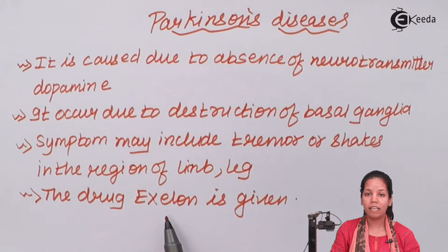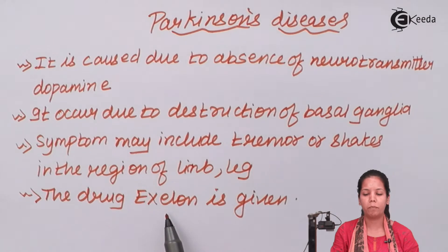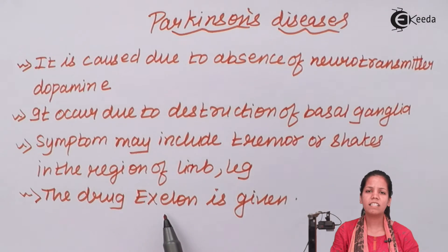Certain medications are given to patients with Parkinson's disease, similar to treatments for Alzheimer's. This is a disease that mostly affects people in old age.